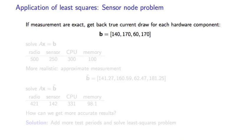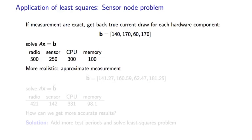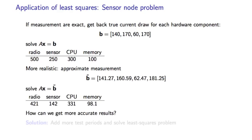If the measurements we put into the vector B are exactly accurate, when we solve Ax equals B, we get back the true current draw for each of the components. However, in a more realistic scenario, our measurements are only approximate. Let's call the resulting vector tilde B. When we solve the equation Ax equals tilde B, we get only rough approximations to the true current draw per component. How can we get more accurate results without making more accurate measurements?